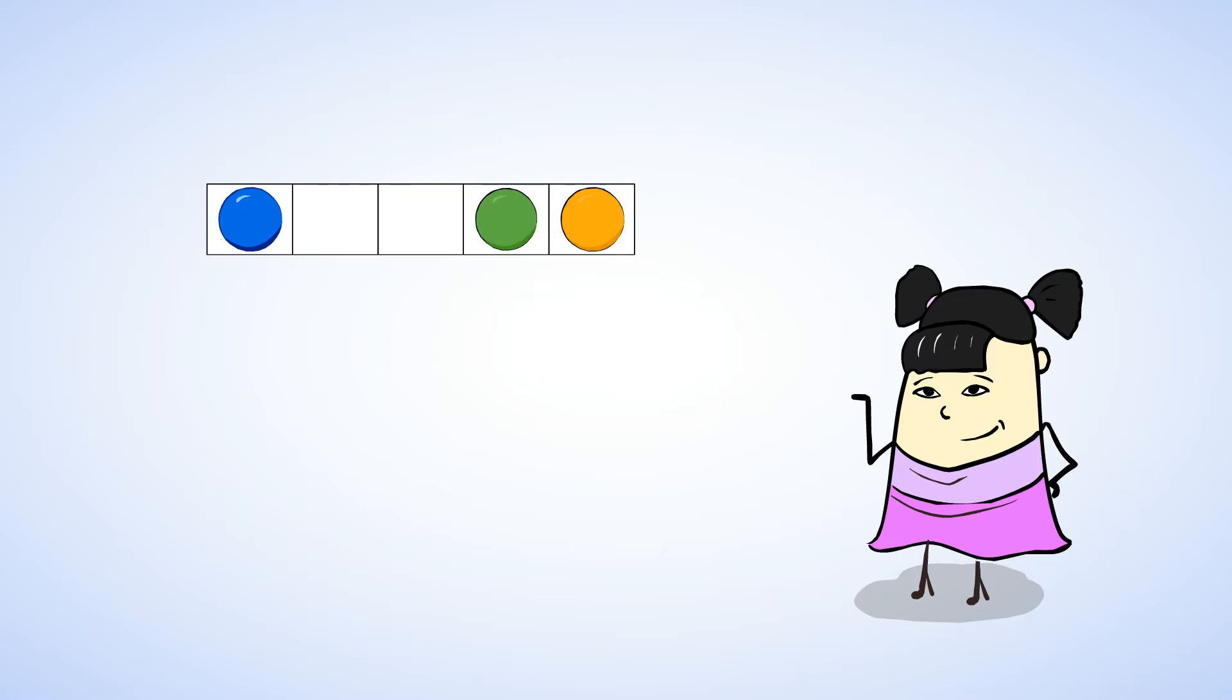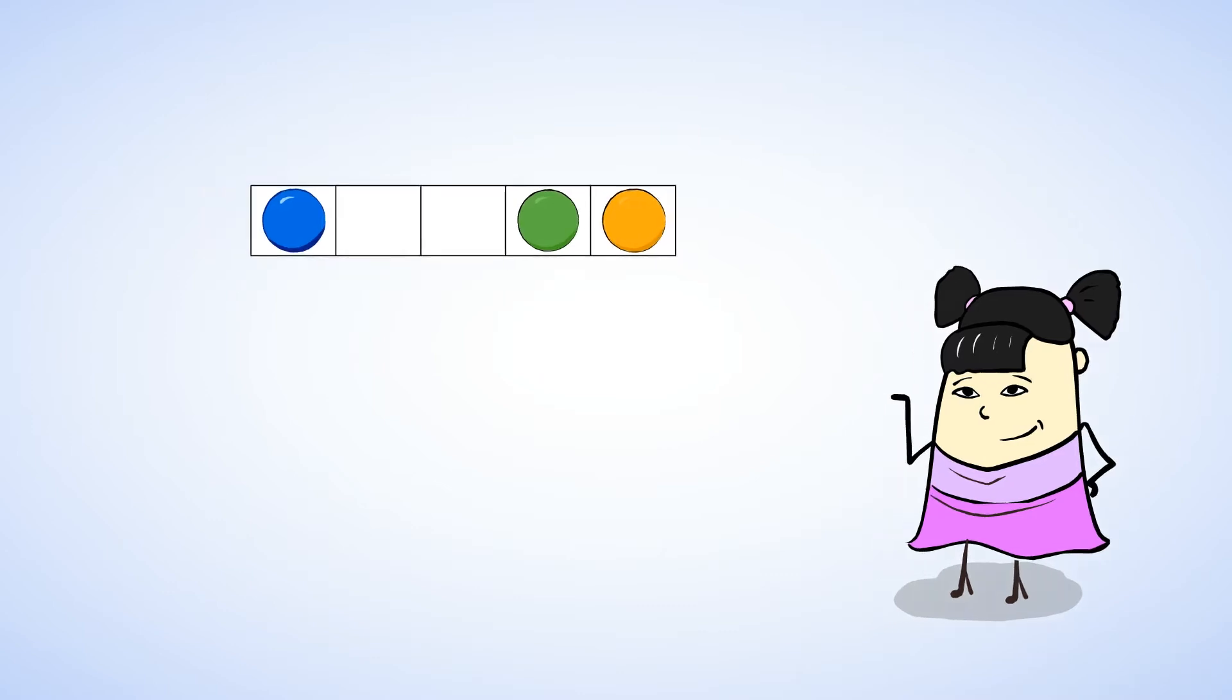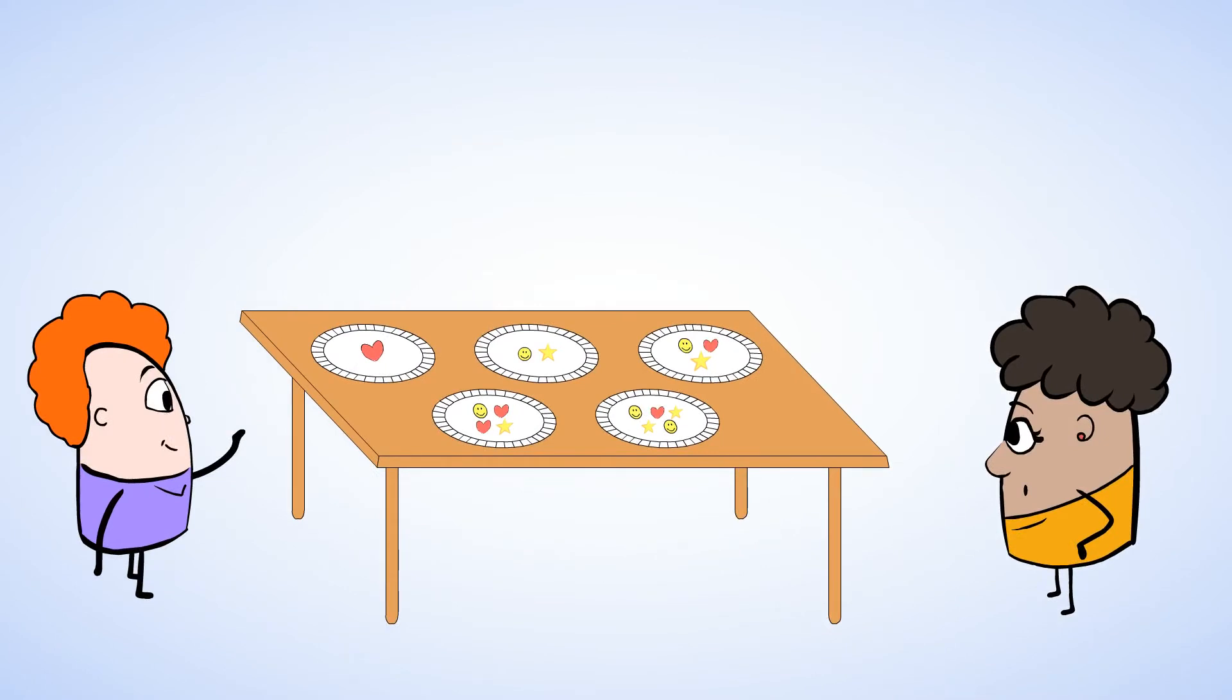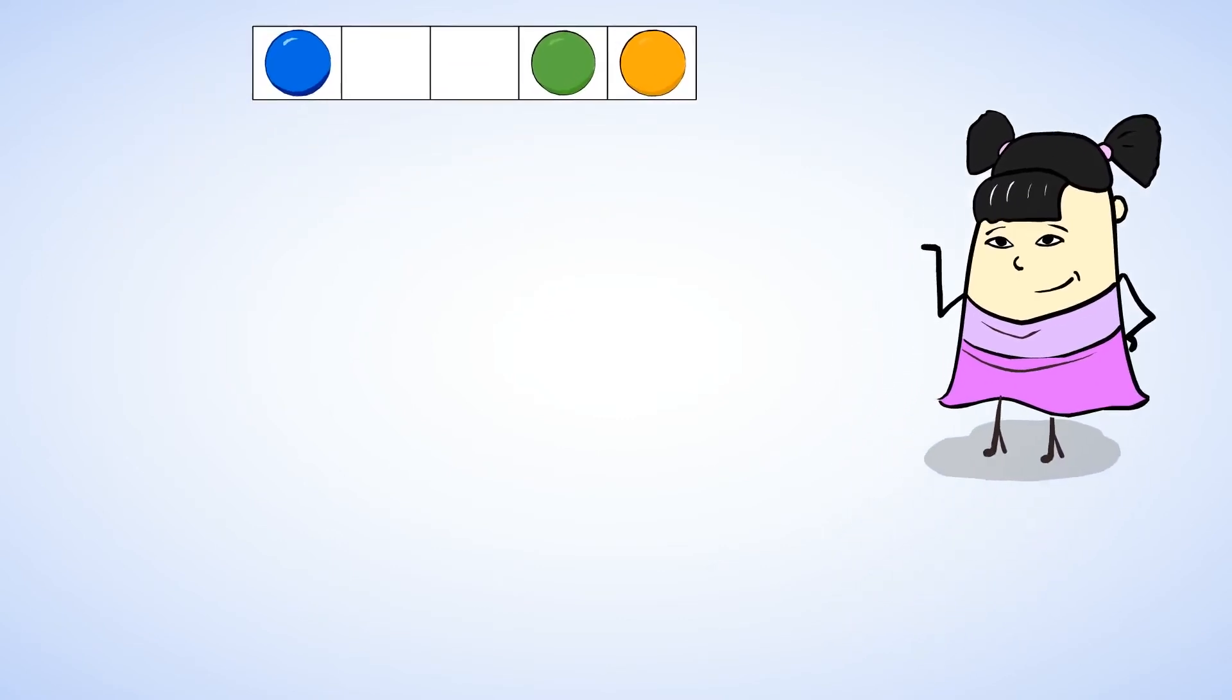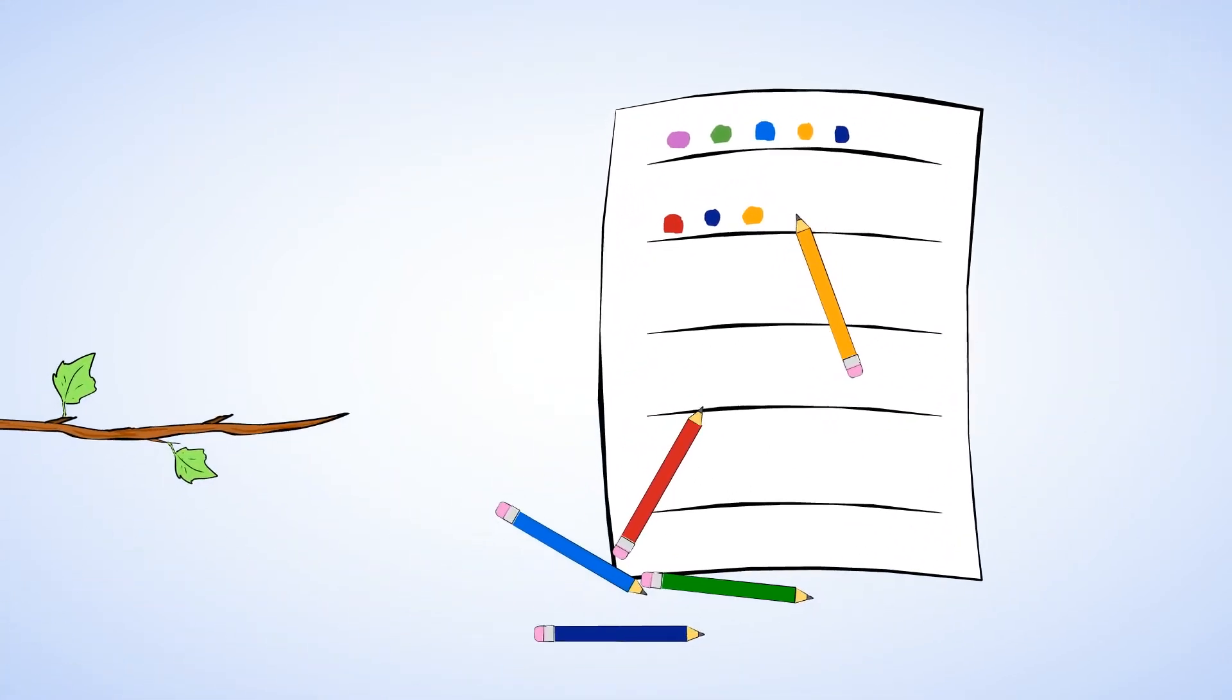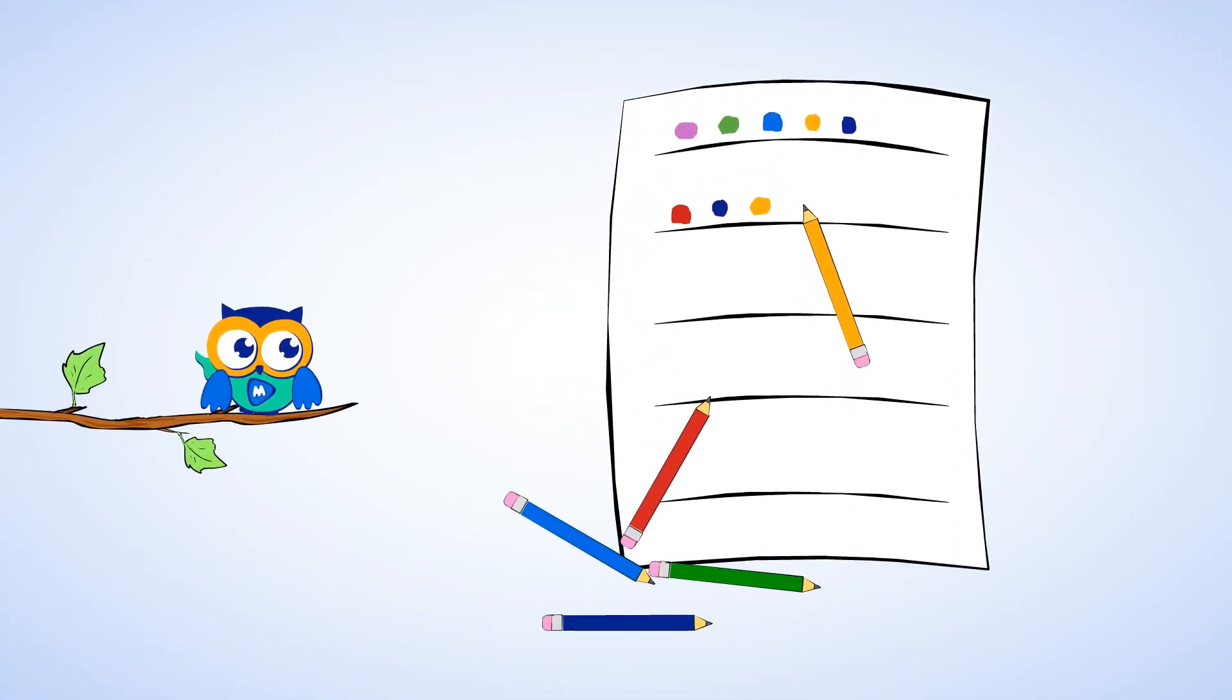You did amazing work today. We practiced figuring out how many without having to count. We took a quick peek at so many five frames, and then we used our mighty brains to find out how many are there. You can keep playing with this. Draw some dots on paper and flip it over fast. See if you can guess how many there are, and then count to see if you're right. See you soon. Stay mighty.